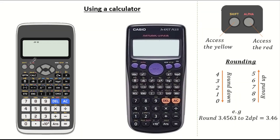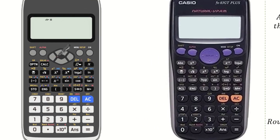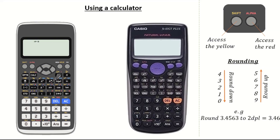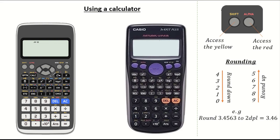And to access anything which is red on the calculator you access it using the alpha button. It's really important that you know how to navigate through a calculation using the cursor keys — knowing if you need to go up, down, left or right to come out of an operation. So let's have a look at a past exam question so you can see what I mean.